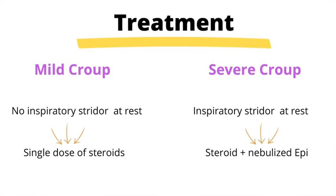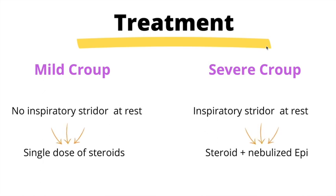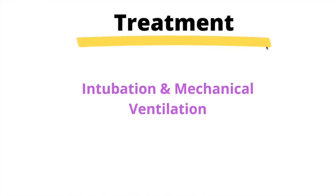For severe croup — meaning there is inspiratory stridor present at rest — we give them steroids and nebulized epinephrine. But what if all of that fails? We give the steroids, we give epinephrine, we give humidified air, but none of it is working. In that case, we have to move on to intubation and mechanical ventilation, which is indicated for failed medical management or if the patient has impending respiratory distress.